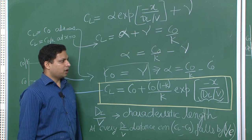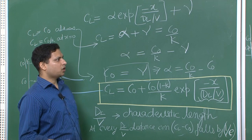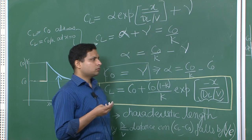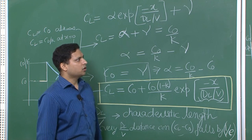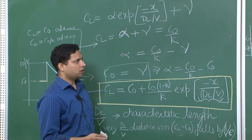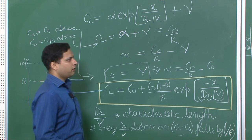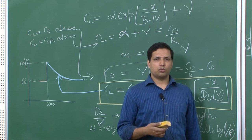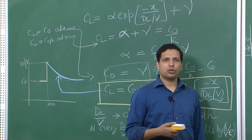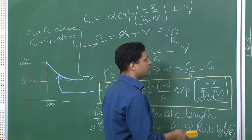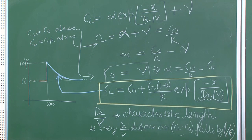We have now covered three different conditions for solidification: first, equilibrium; second, no solid diffusion but complete homogenization in liquid; and third, no solid diffusion with limited liquid diffusion. We will now move on to an even more realistic condition, which includes some amount of convection in the liquid.